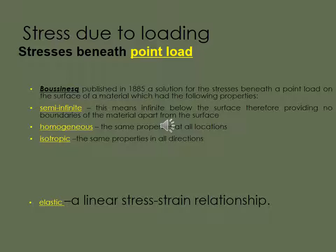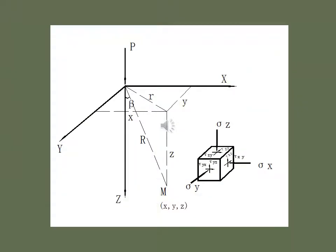Stress due to loading. Stresses beneath point load. Boussinesq's published 1885 a solution for the stresses beneath the point load on a surface of a material which had the following property: Semi-infinite, this means infinite below the surface therefore providing no boundaries of the material separation apart from the surface. Homogeneous, the same properties at all locations. And isotropic, the same properties, the same mechanical properties in all directions. Elastic, a linear stress strain relationship is valid.